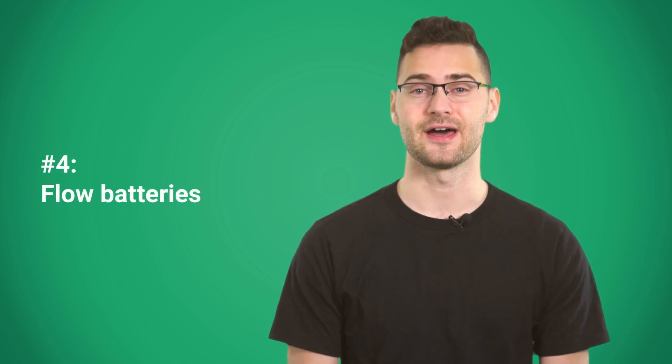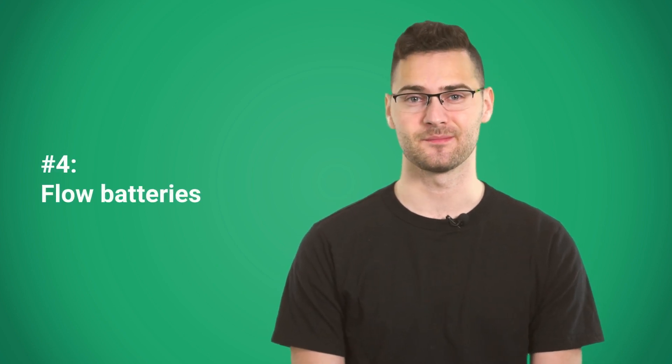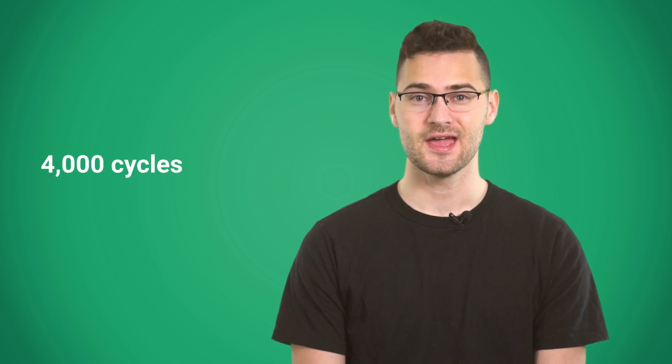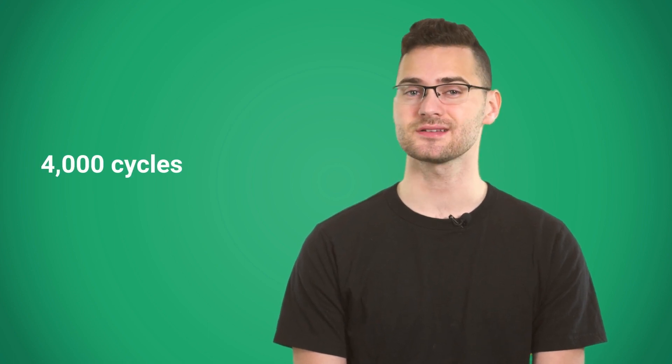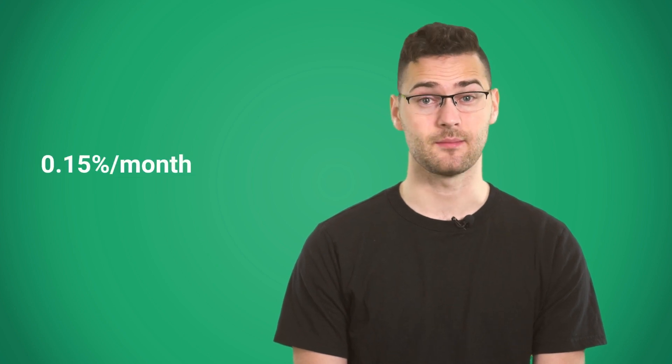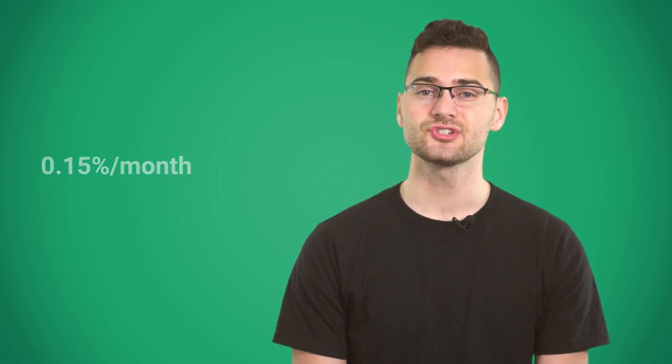The fourth type of battery is a flow battery. There's a lot of good things about them. You can discharge flow batteries fully, and they can stay empty for decades. A flow battery has a good lifespan around 4000 cycles. They don't need any maintenance, and their self-discharge rate is only 0.15% a month. They can store large amounts of power, which makes them good for off-grid systems.